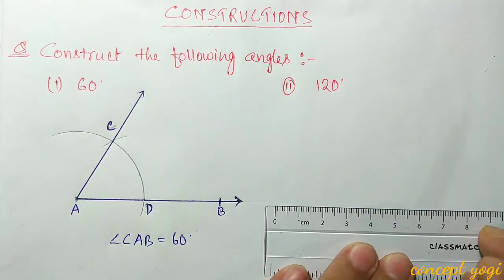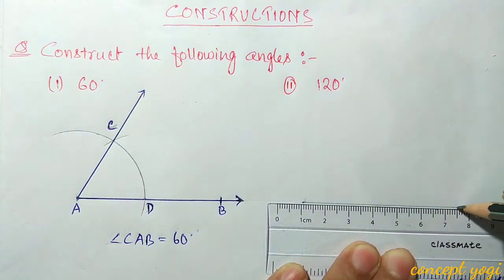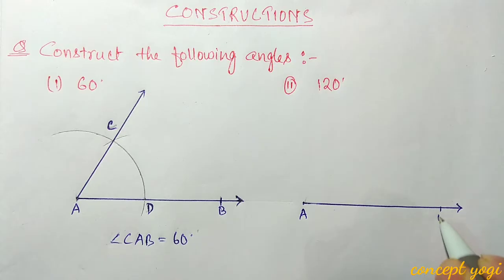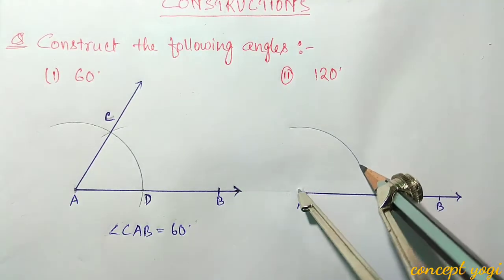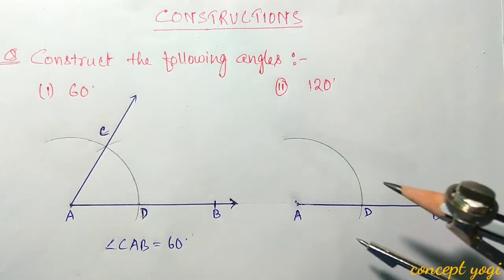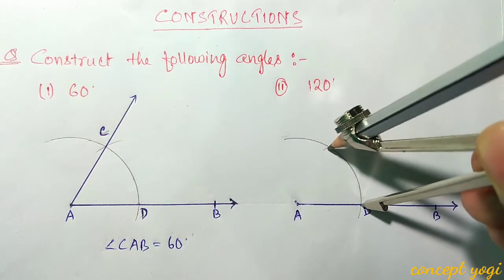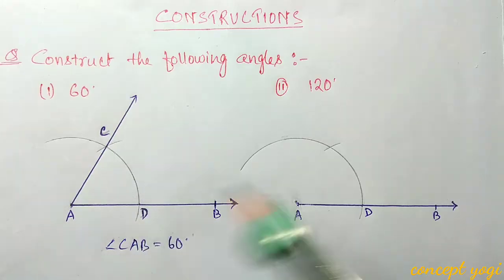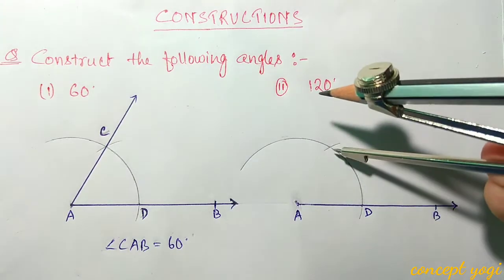Now we will construct a 120 degree angle. We follow the same steps — first we will draw a ray, then taking the endpoint of the ray as center we will draw one arc. Say AB is our ray. Now taking A as center and with some radius we will draw one arc. The arc and the ray intersect at point D. Taking D as center and with the same radius we will cut the arc. This first cut is your 60 degree, but we don't need 60 degrees — we need 120 degrees, so we will take that point as center and with the same radius do another cut.